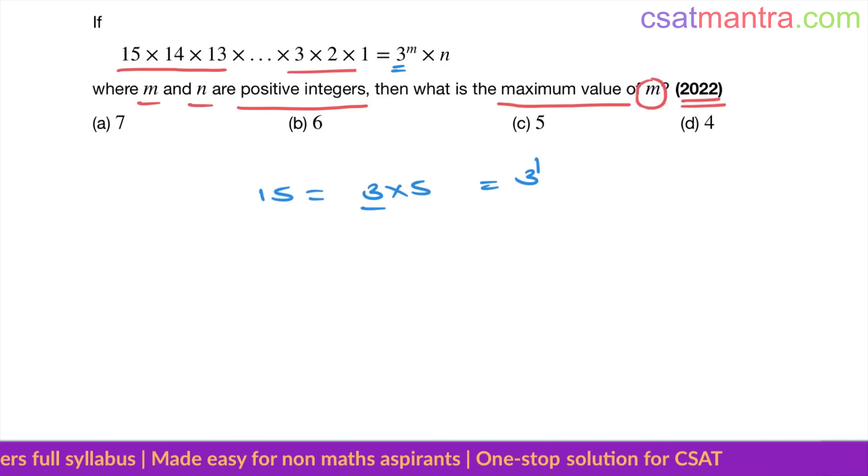13 is not a factor of 3. 12 = 3 × 4, we have one 3 here. 11, no. 10, no. 9 = 3², so here 3^2. 8, no. 7, no. 6 has one 3 in it.